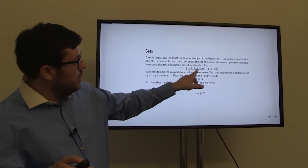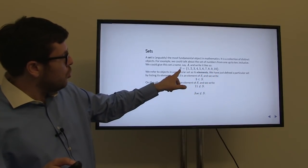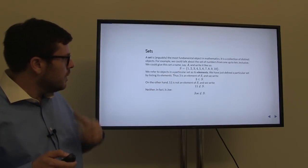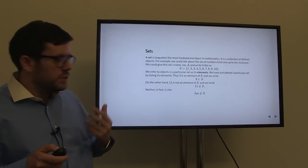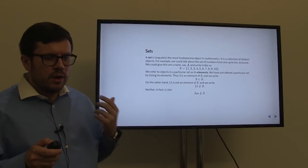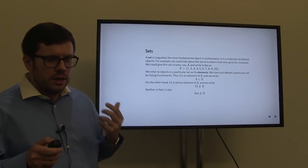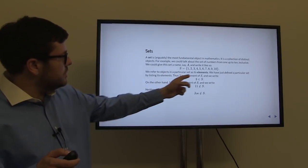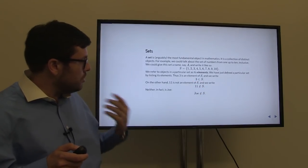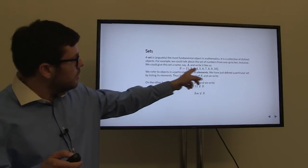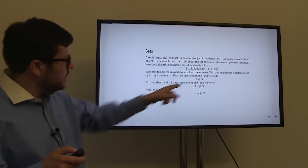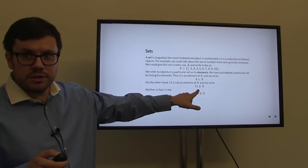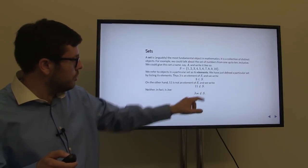We define this set by listing its elements, and we call it by a particular letter — in this case, S. We refer to objects in a particular set as its elements. Thus, 3 is an element of S and we write '3 belongs to S.' On the other hand, 11 is not an element of S, so we write '11 does not belong to S.' This is the set-theoretic notation for 'belongs to' and 'does not belong to.'